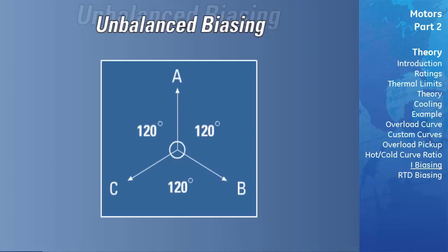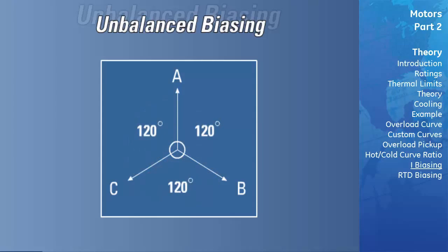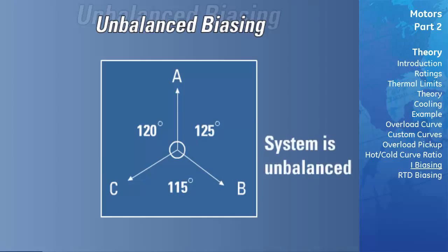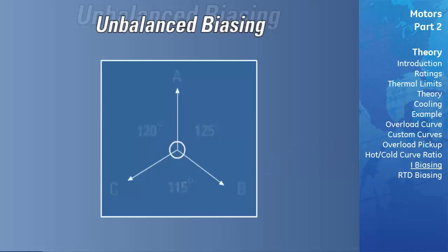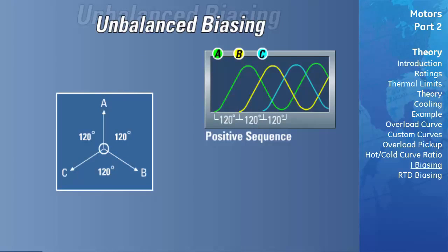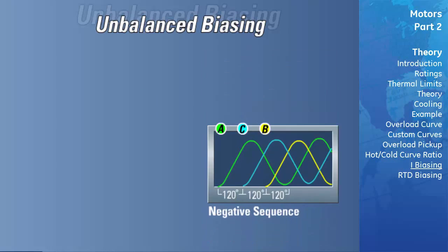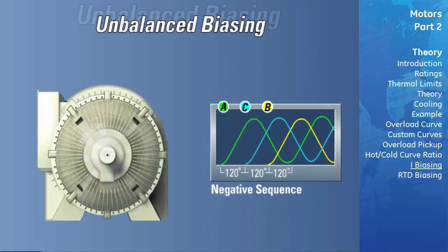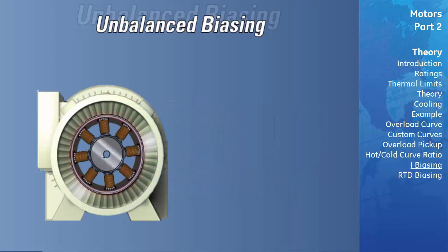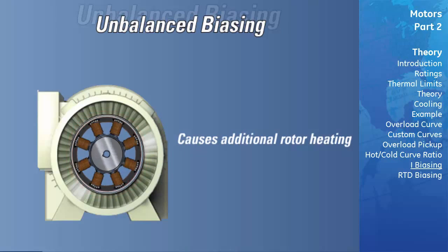A balanced three-phase system is one in which the phase vectors are 120 degrees apart and of equal magnitude. If either condition is not met, the system is considered unbalanced. The amount of unbalance is calculated by comparing the positive sequence current to the negative sequence current. A positive sequence set consists of three equal vectors displaced by 120 degrees with phase sequence A, B, C. A negative sequence set has phase sequence A, C, B. Negative sequence currents — or unbalanced phase currents — will cause additional rotor heating that will not be accounted for by electromechanical relays and may not be accounted for in some electronic protective relays.